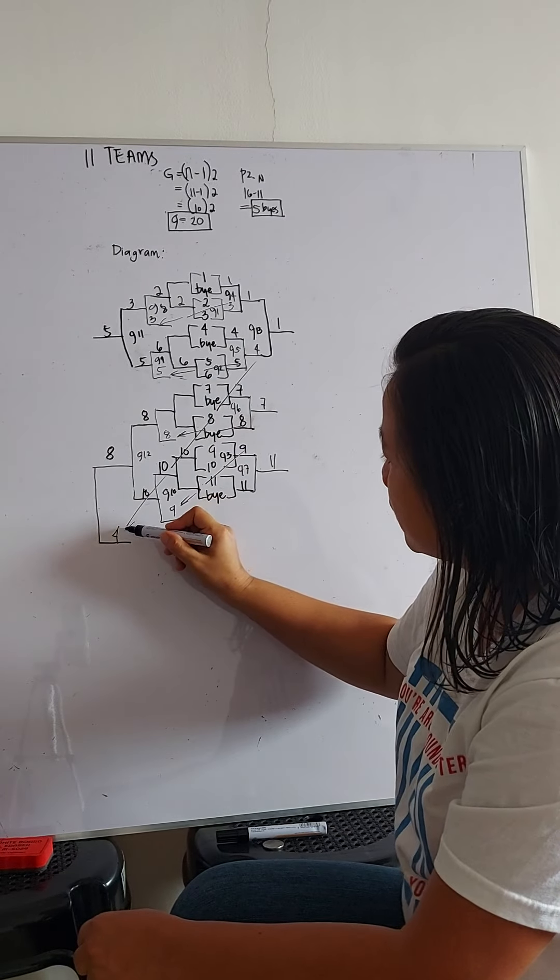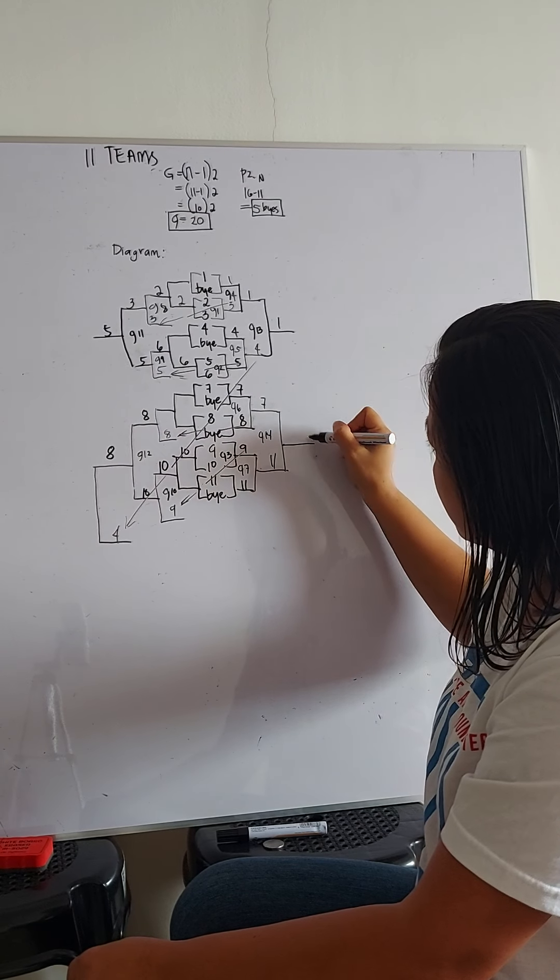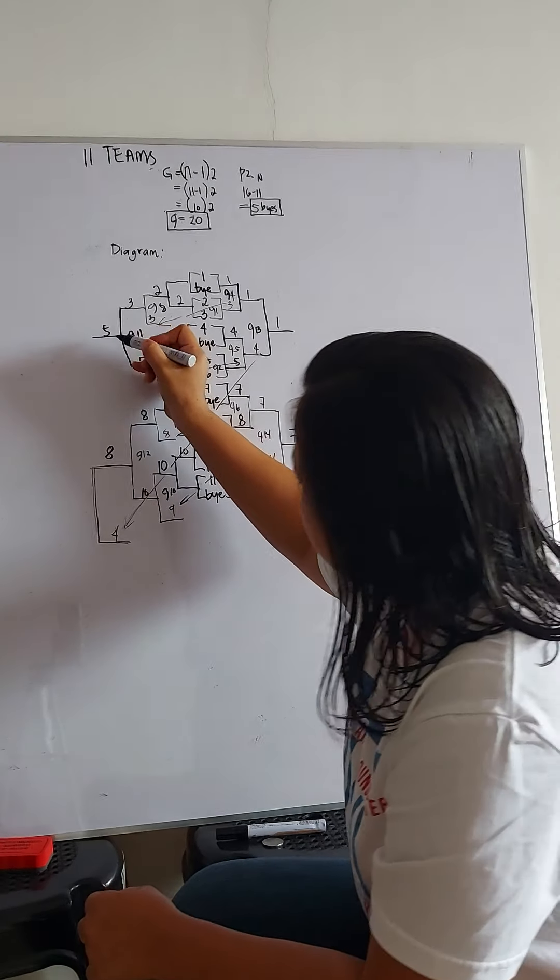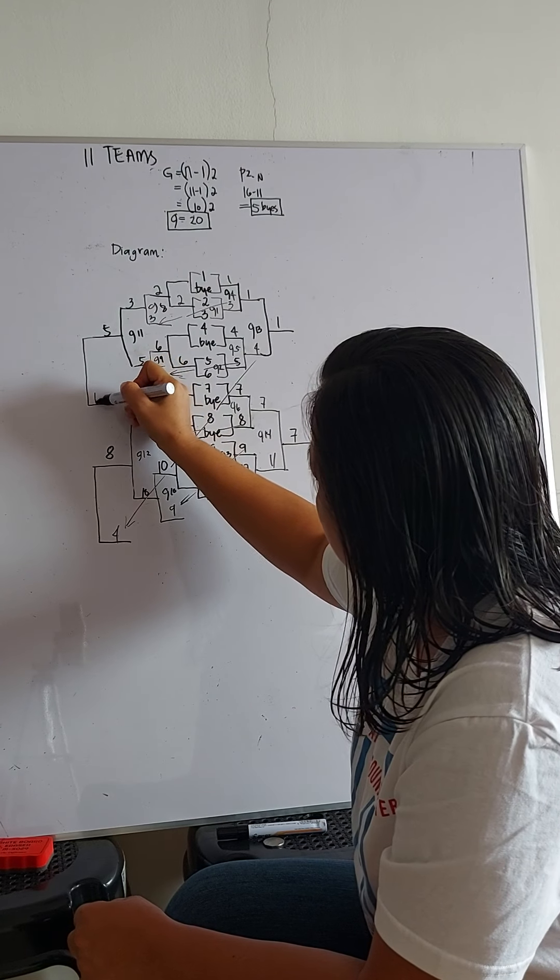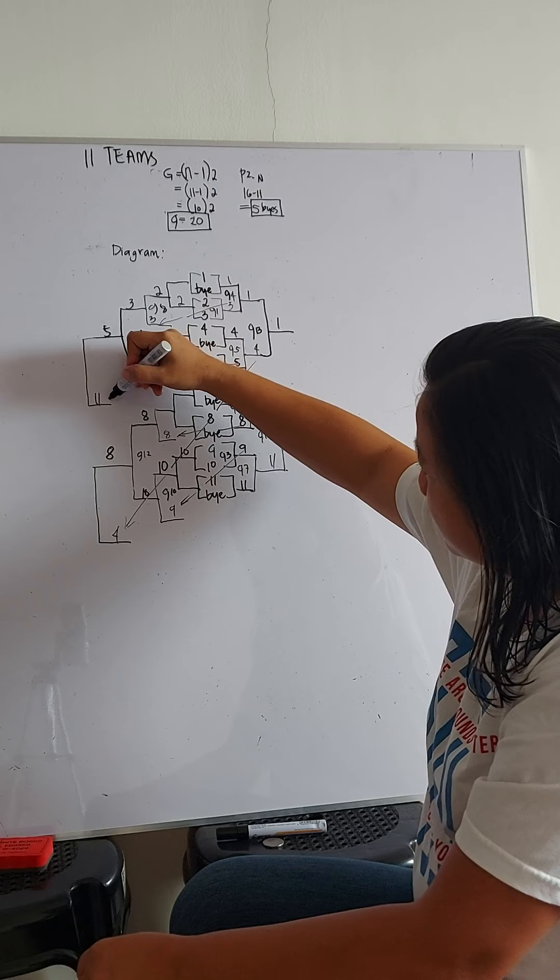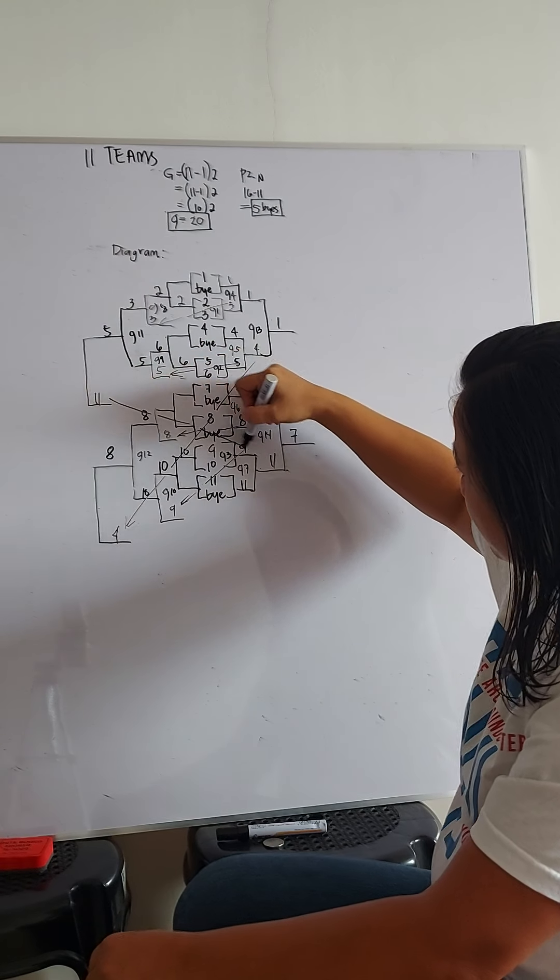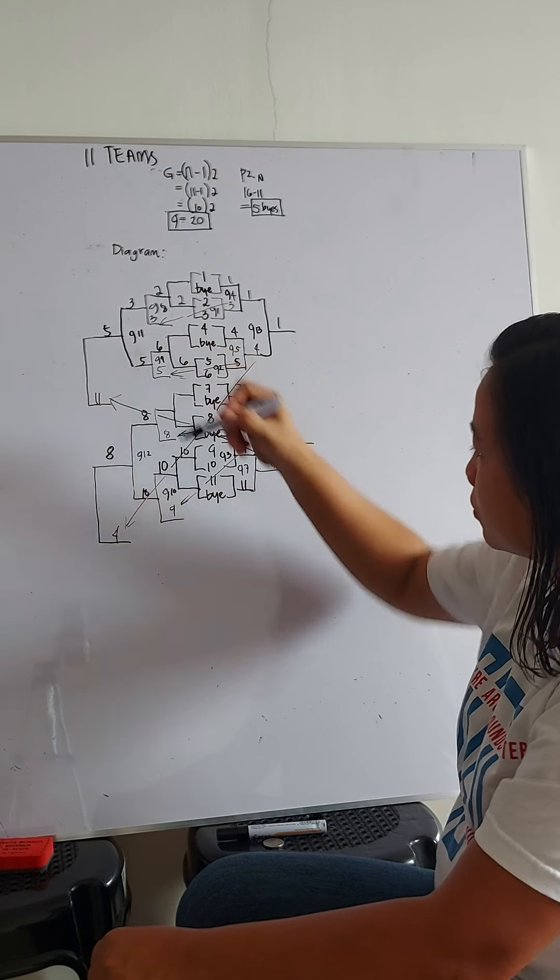Who is our loser? Game 14. We have team 11. So, broken arrow or arrow will do.